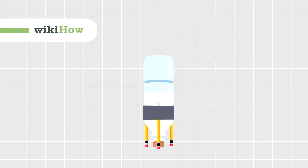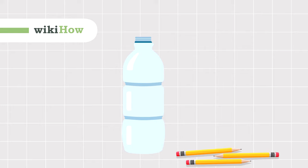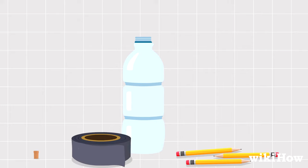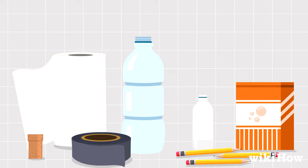To make a baking soda and vinegar rocket, you'll need an empty plastic bottle, three pencils, duct tape, a cork, a paper towel, baking soda, and vinegar.